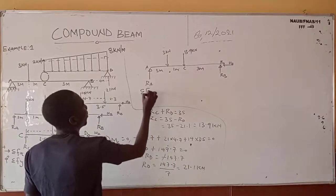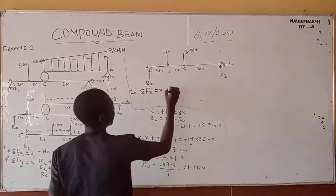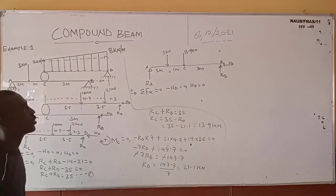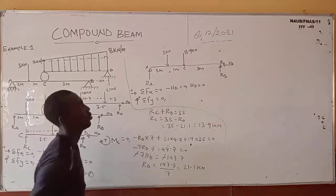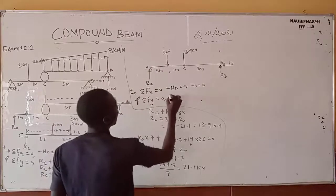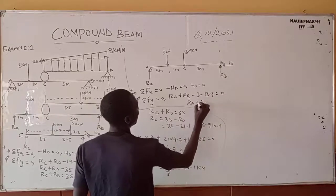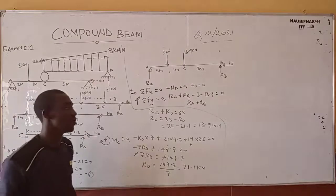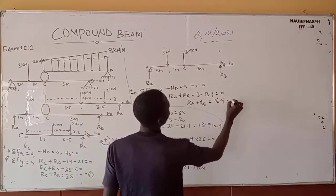Taking summation of vertical forces equals zero with upward as positive: RUA plus RUB minus 3 minus 13.9 equals zero. So RUA plus RUB equals 16.9 — this is equation 2. Taking moments about A equals zero. The total distance of this beam is 3 plus 1 plus 3 equals 7 meters.